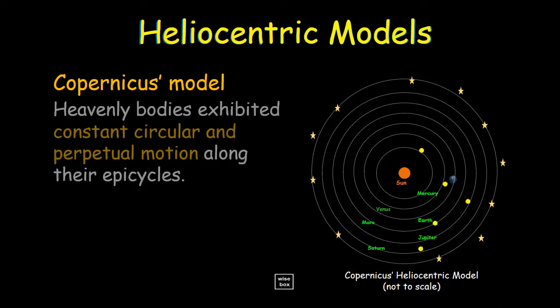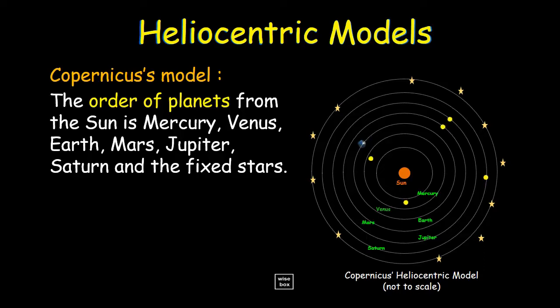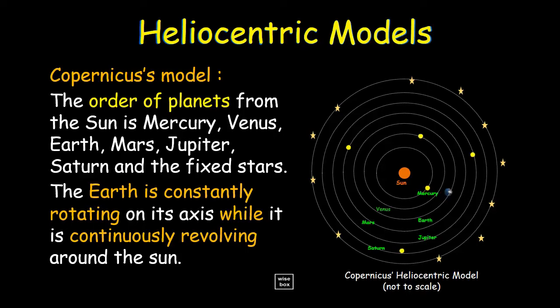In Copernicus model, heavenly bodies exhibited constant circular and perpetual motion along their epicycles. This is a large epicycle wherein the Sun is at the center. The order of planets from the Sun is Mercury, Venus, Earth, Mars, Jupiter, Saturn, and the fixed stars. The Earth is constantly rotating on its axis while it is continuously revolving around the Sun.